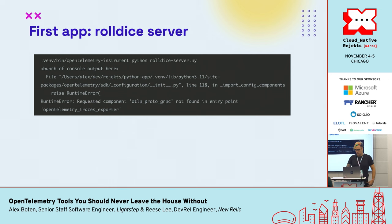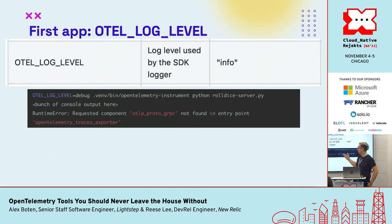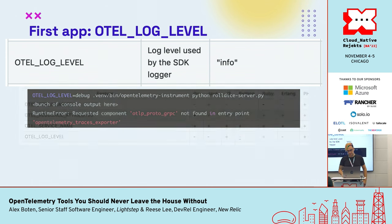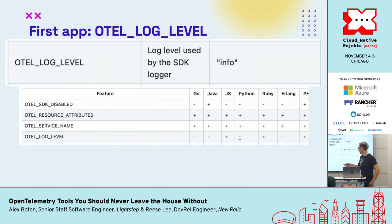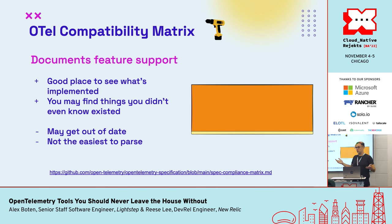I ran the script with the OTEL_LOG_LEVEL environment variable, but unfortunately made no progress. Then I remembered there's a compatibility matrix that shows you what is implemented in what languages. The feature I needed was not implemented — highlighted in blue as not implemented, with a link to the open issue. The OpenTelemetry compatibility matrix is a really useful tool showing what features are implemented in what languages, though it can be out of date, and the table is very wide with around 11 different languages, making it hard to parse.